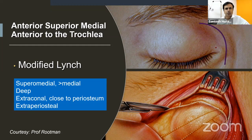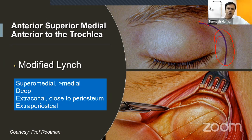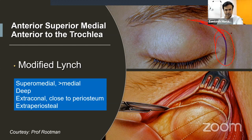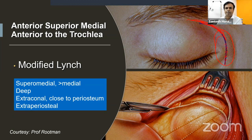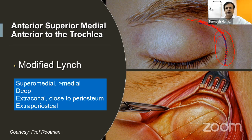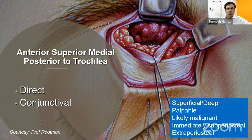For an approach posterior to the trochlea, a direct sub-brow incision is used — you can retract the superior oblique muscle and sometimes descend the trochlea and replace it. This is a direct approach for superficial or deep lesions, likely malignant, either immediately subperiosteal or extra-periosteal in the supranasal orbit. A conjunctival incision is also available for the supranasal orbit for tumors very close to the eyeball.